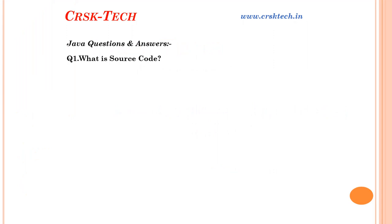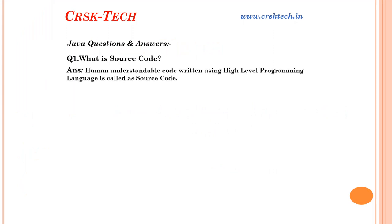Question number one: What is source code? Human understandable code written in high-level programming language is called source code. C language, C++ language, Java language — these all are high-level programming languages. The program written in a high-level programming language is called source code. For example, a C program, C++ program, or Java program is called source code.